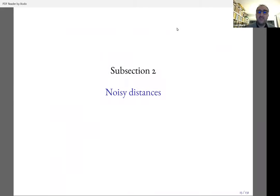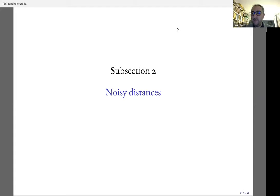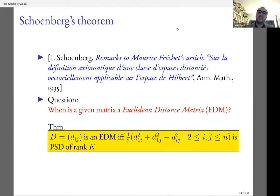We've seen the usefulness of representing abstract metric spaces into a vector space and the case of missing distances. Now let's see the other case, which is much more relevant: noisy distances. You have your own idea of how two people differ — you can never fully explain it, but you can still attach a number to it. These distances are very noisy, meaning they are not distances at all. And that takes me to Schoenberg's theorem.